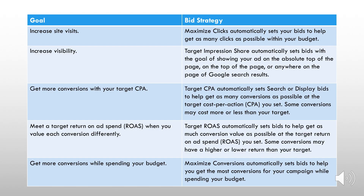Here's a list of some automated bid strategies that Google has to offer. Automated bid strategies can be like maximize clicks or maximize conversions. In the case of maximize clicks, Google will try and get you a lot of clicks. In the case of maximize conversions, Google will try and get you a lot of conversions.